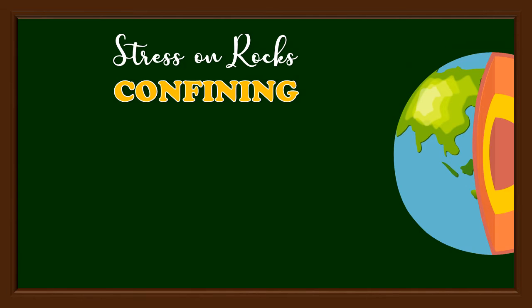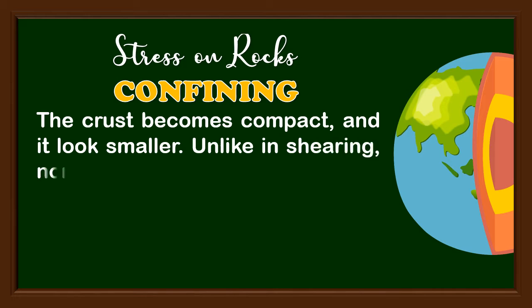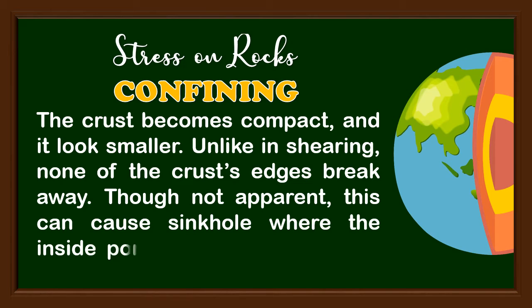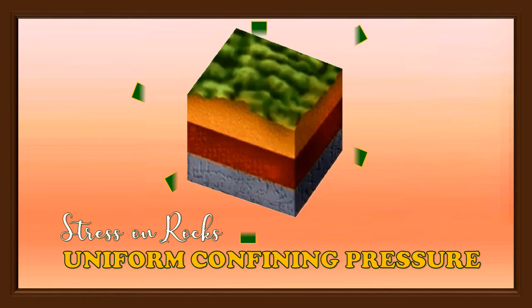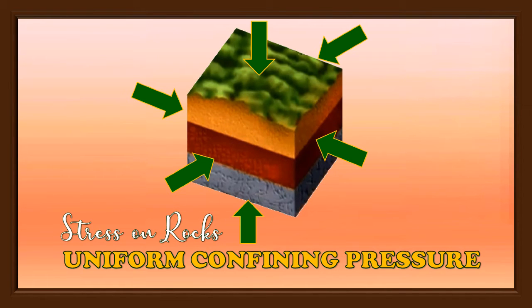The fourth stress on rocks is called confining stress. The crust becomes compact and looks smaller. Unlike in shearing, none of the crust's edges break away. Though not apparent, this can cause sinkholes where the inside portion of the ground has already been disintegrated. Because of uniform confining pressure, breaking away of rocks happens from the inside. This may retain the shape of the crust but not its mass, as deformation has occurred inside.